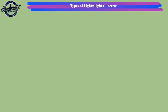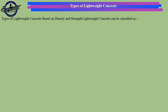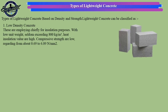Lightweight concrete can also be classified based on density and strength. Type 1: Low density concrete. These are employed chiefly for insulation purposes, with low unit weight seldom exceeding 800 kilograms per cubic meter and high heat insulation value. Compressive strength is low, ranging from about 0.69 to 6.89 Newton per millimeter square.